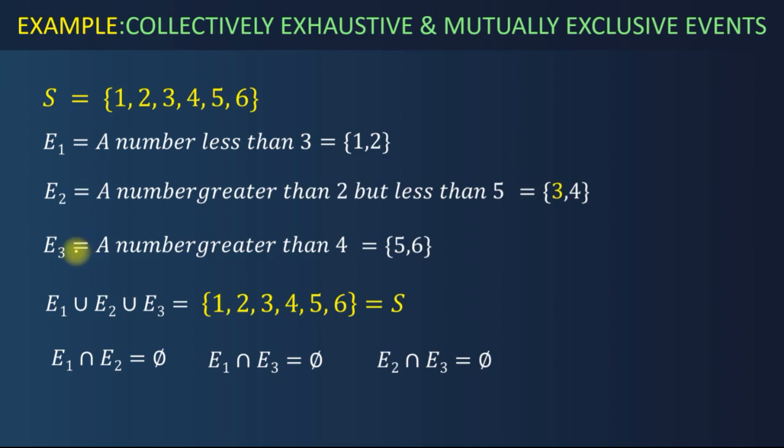Suppose E1, E2, E3 are three events such that E1 is equal to getting a number less than 3, that means it will have two elements: 1 and 2. E2 is an event of getting number greater than 2 but less than 5—definitely it will have two elements, that is 3 and 4. And last one is E3, an event of getting number greater than 4. Of course it will have 5 and 6 as elements.